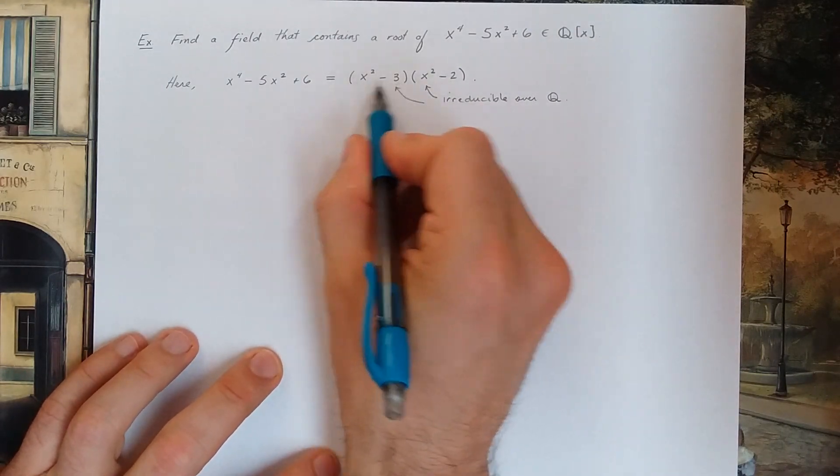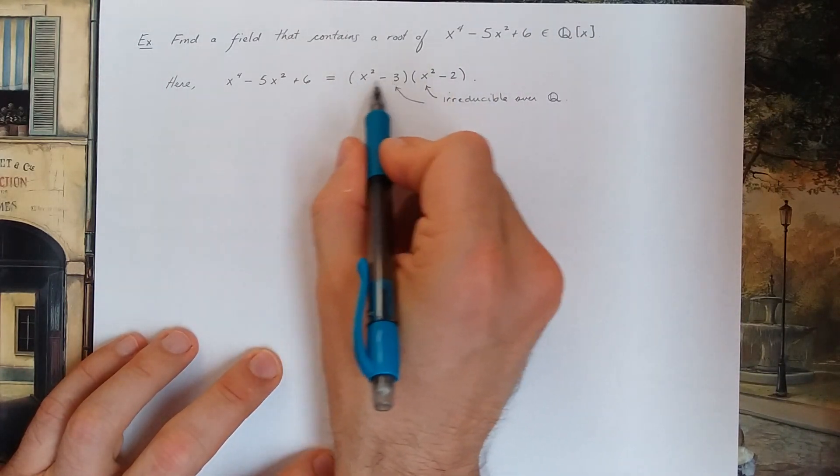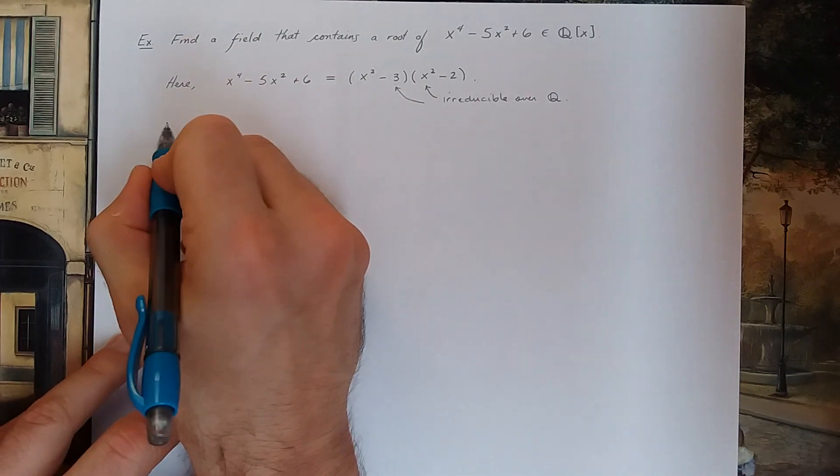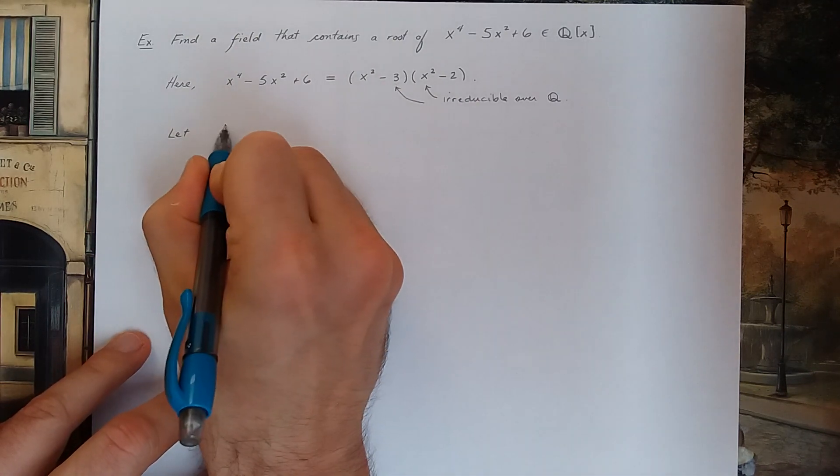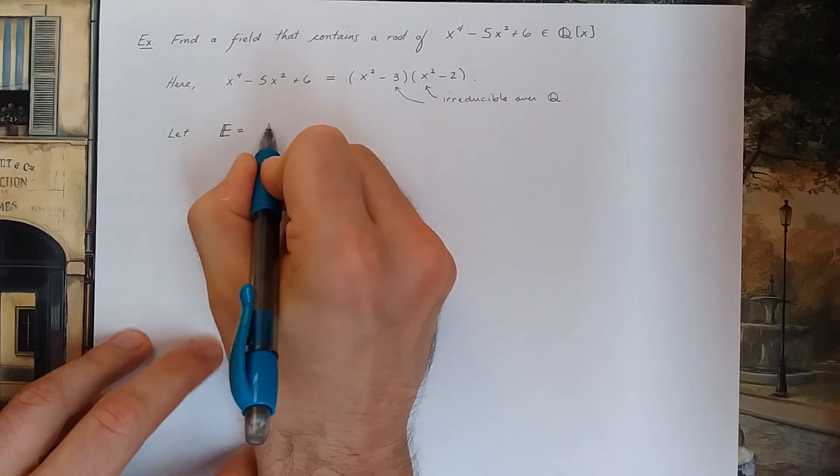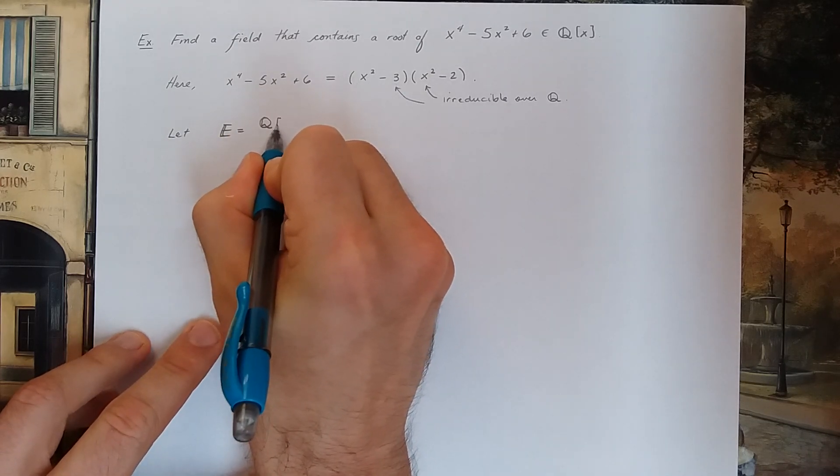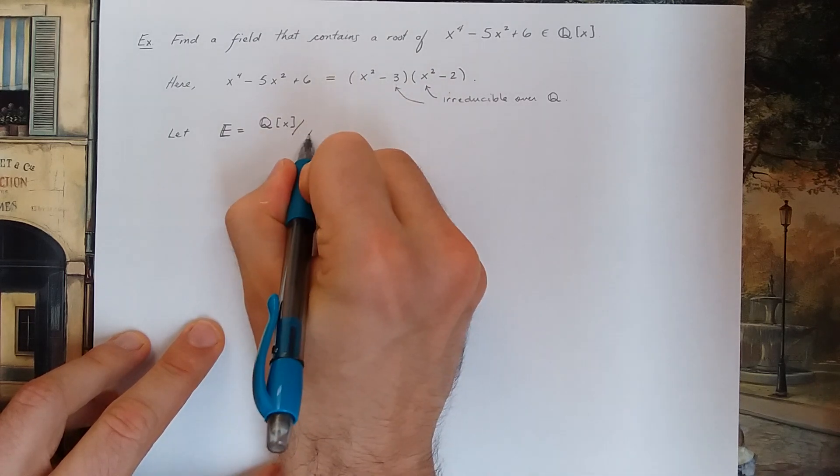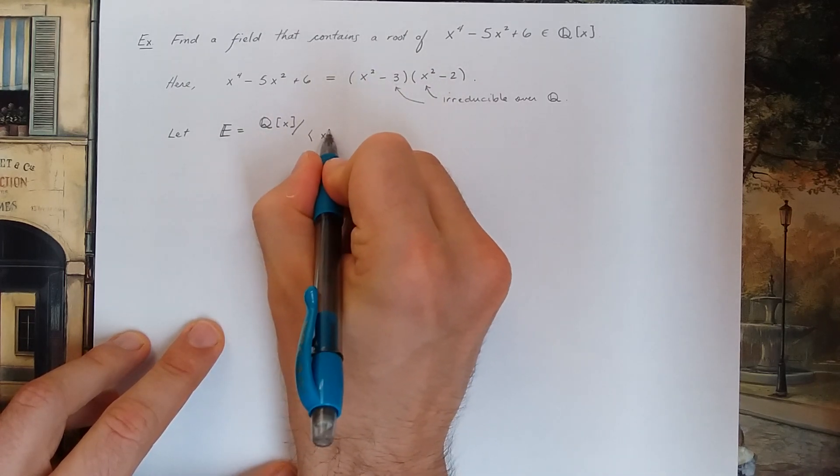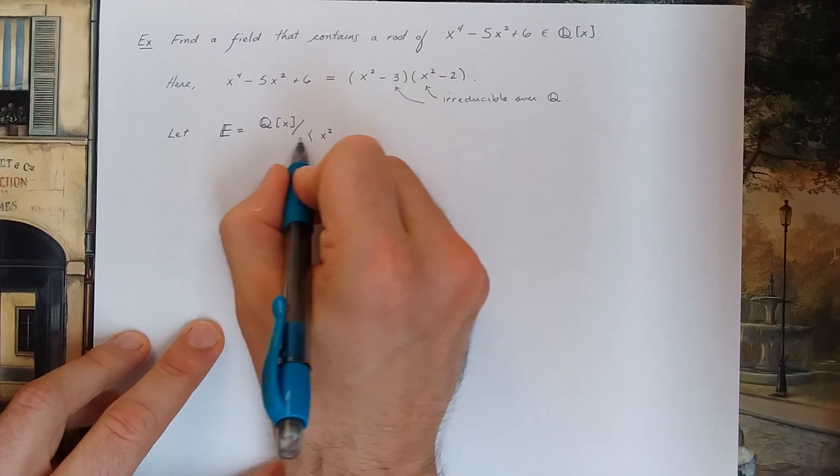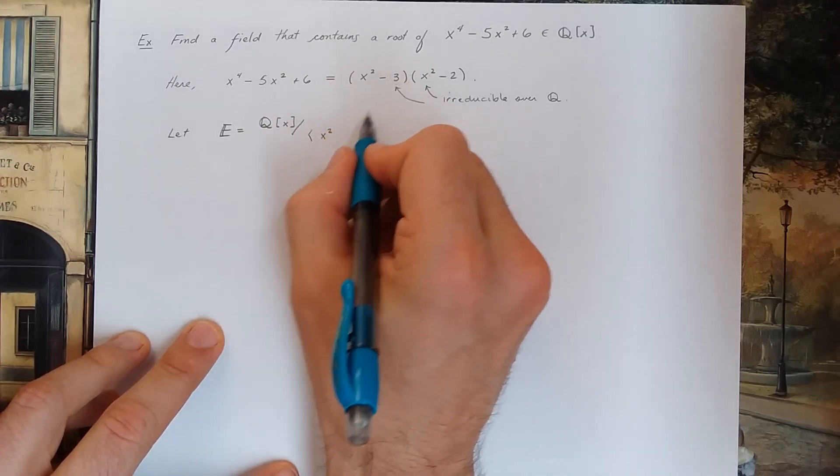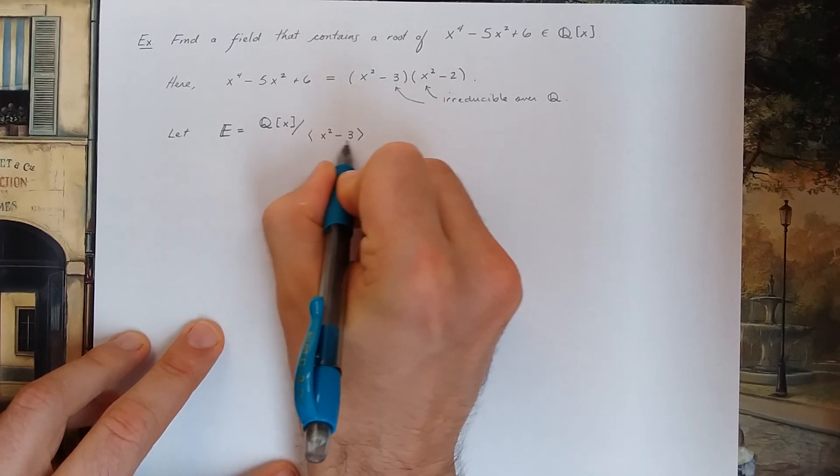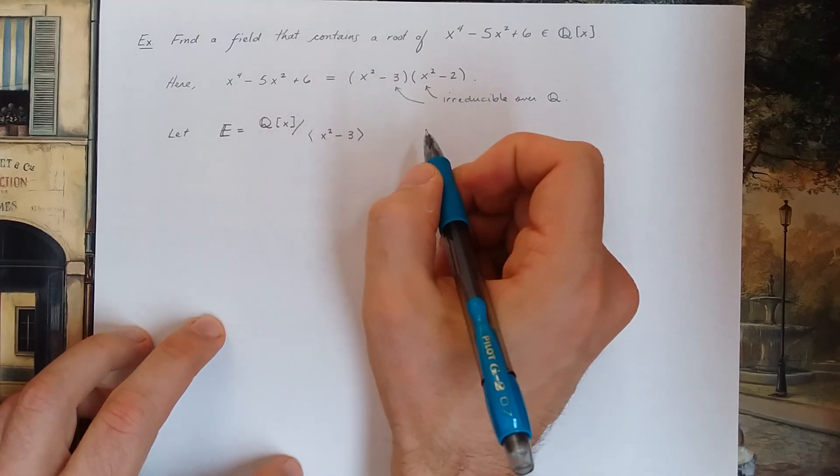So I'm gonna pick one of them. Let's just say that I picked the first one and I'm gonna let my field E be the ring of polynomials with rational coefficients but I'm gonna mod out by the factor ring. I'm gonna mod out by the ideal generated by this polynomial x squared minus 3.